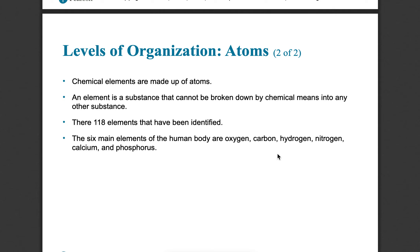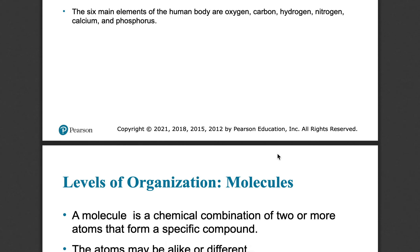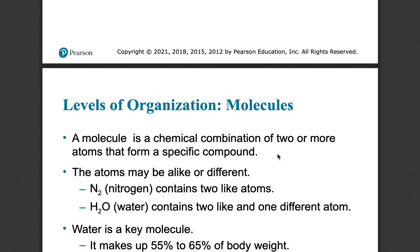There are six main elements in our human body: oxygen, carbon, hydrogen, nitrogen, calcium, and phosphorus. We do utilize others, but those are the six main ones that comprise most of our bodies.